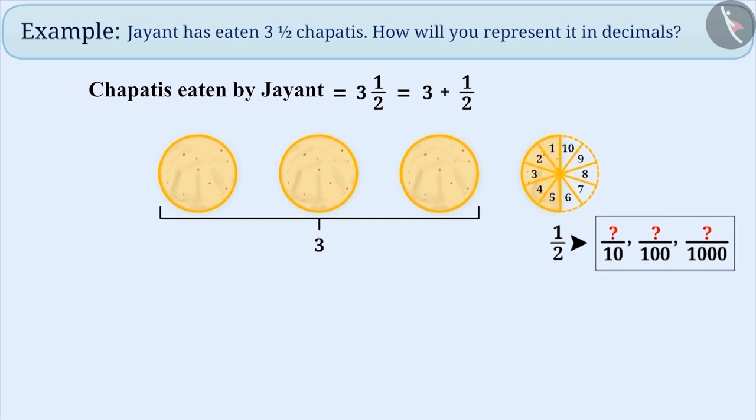In order to do this, we will divide the whole into 10 equal parts. As you can see here, there are 5 parts out of 10 parts of the chapati. So, the equivalent fraction of 1 by 2 is 5 by 10.